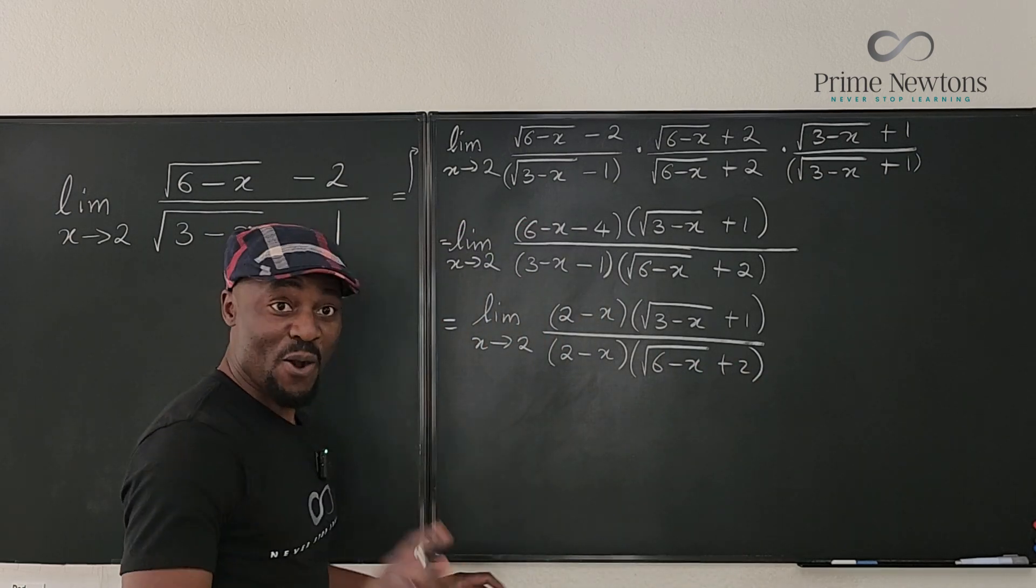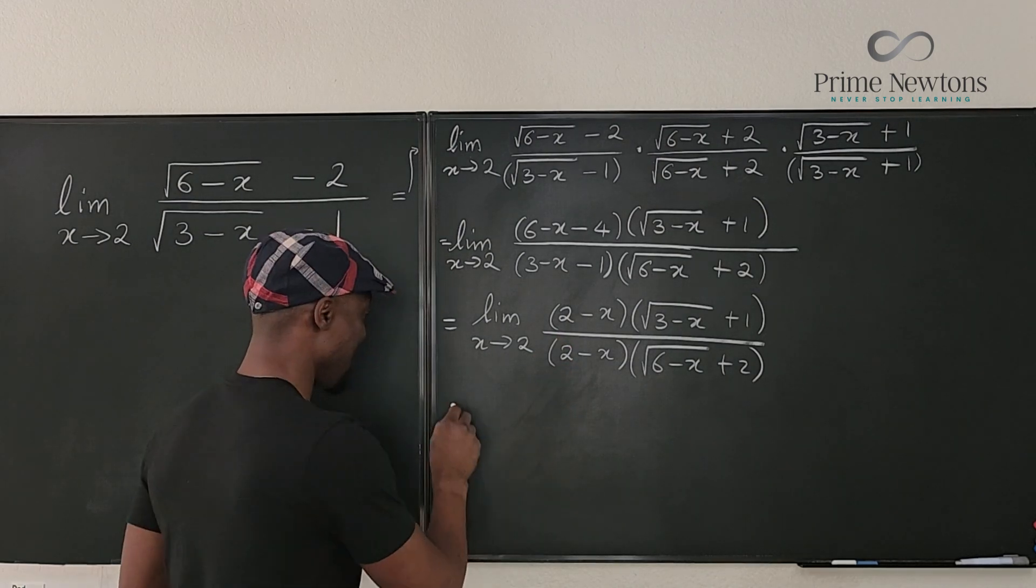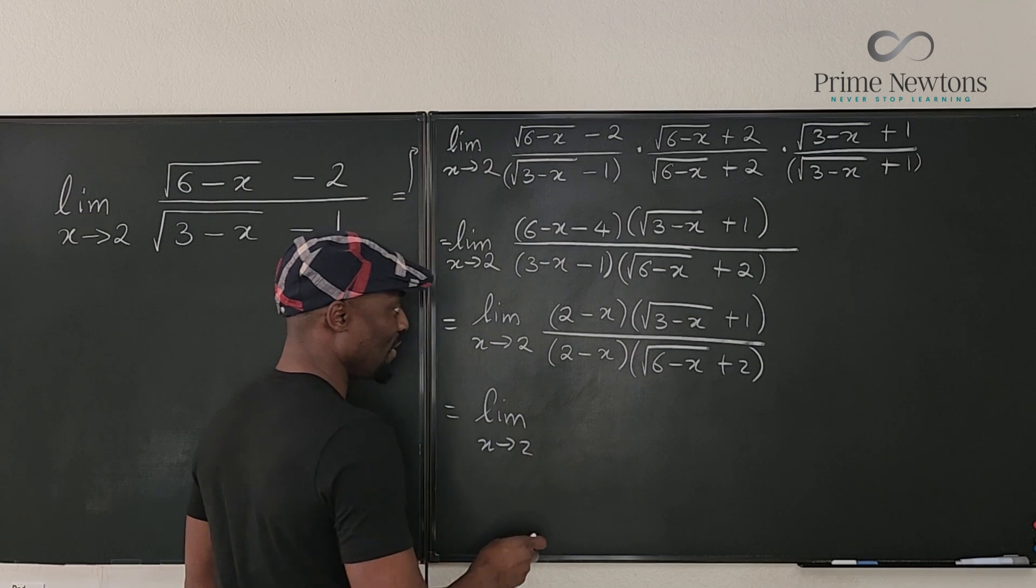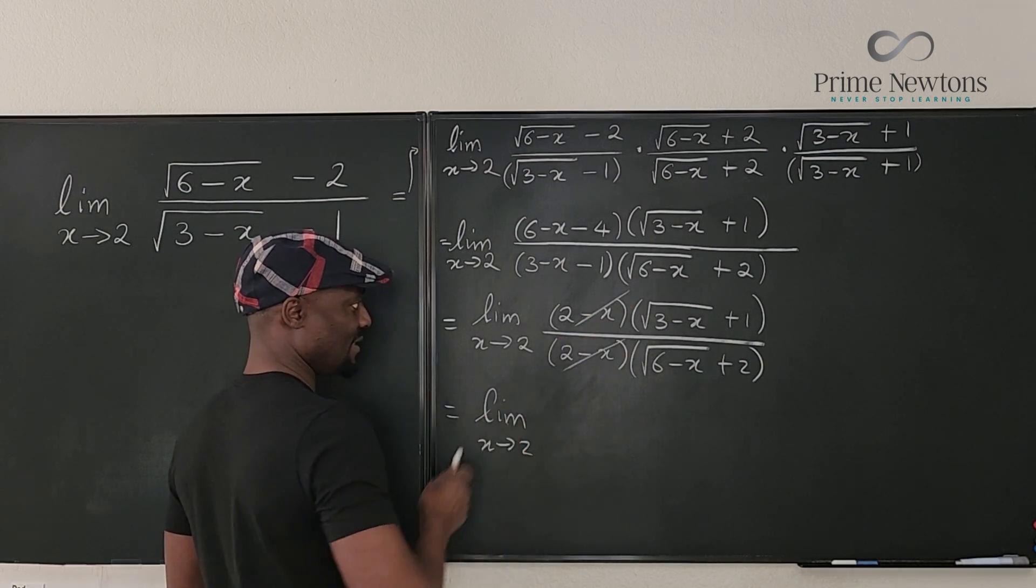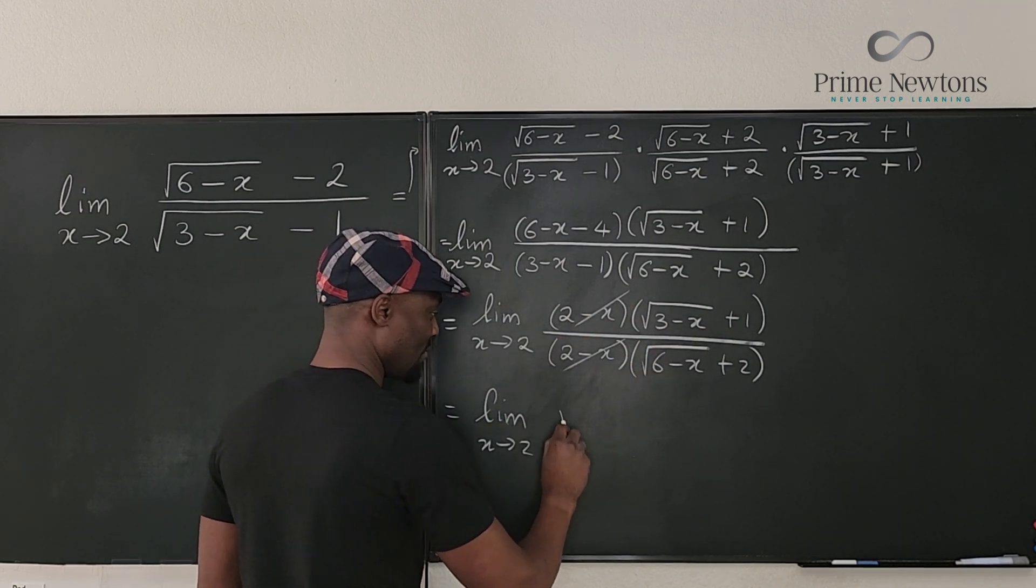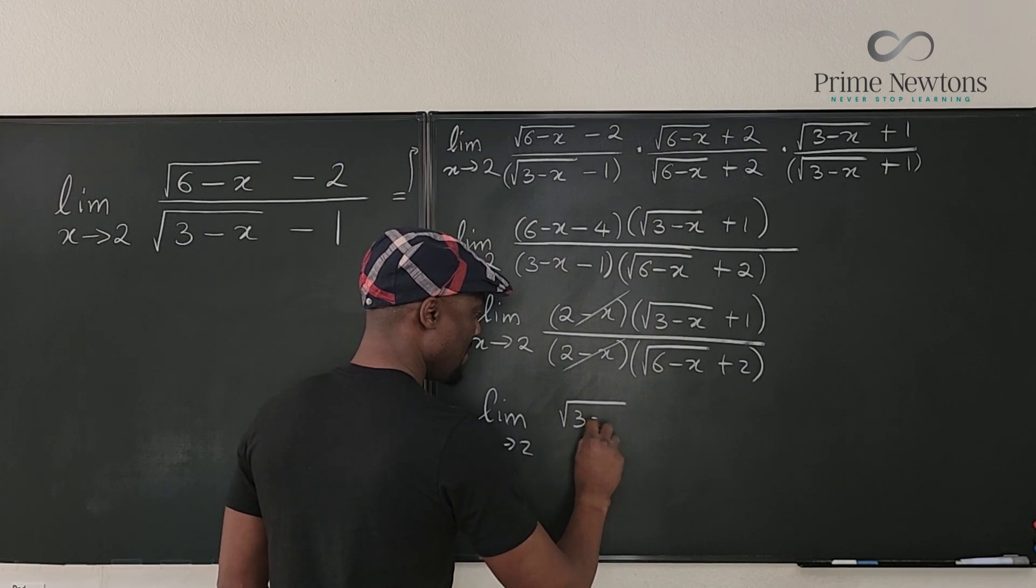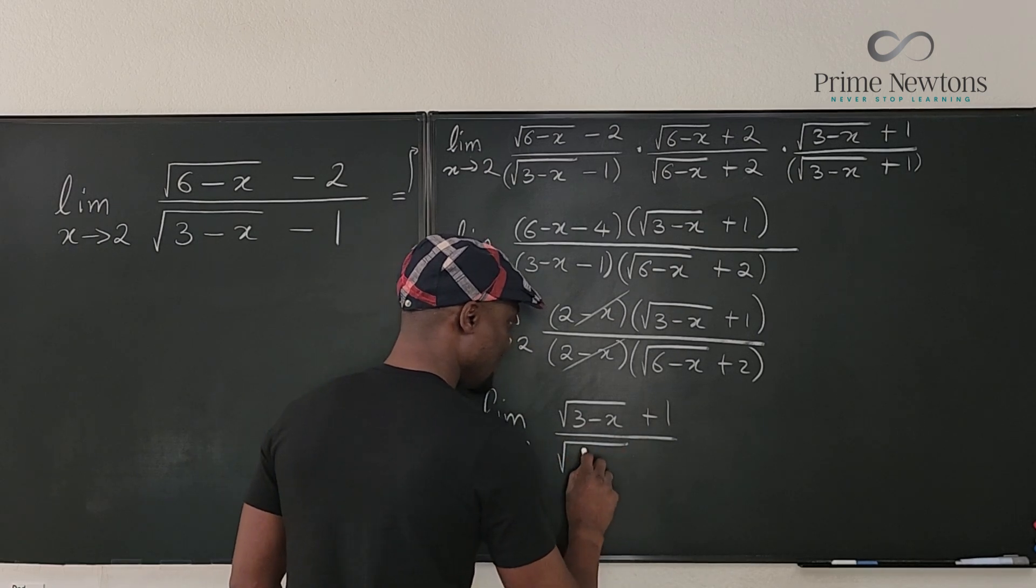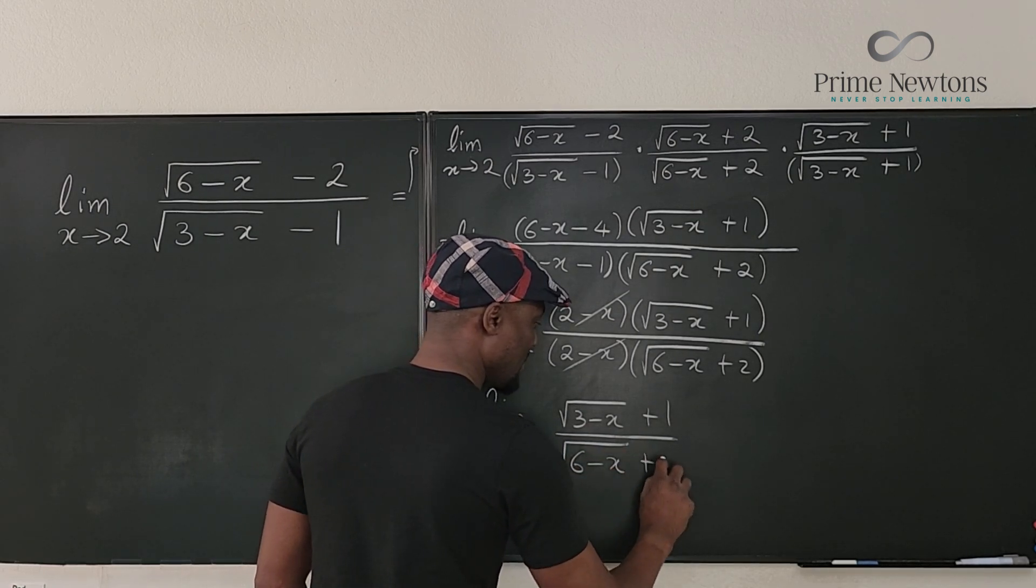Square root of 6 minus x plus 2. Now we clearly can cancel this out. You see that? This is the limit as x approaches 2 of, this divides this. So what we have left is just rad 3 minus x plus 1 divided by rad 6 minus x plus 2.